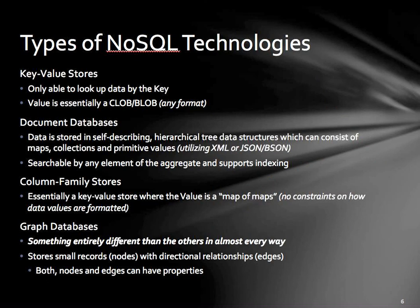Types of NoSQL technologies — the four primary buckets are key-value, document, column families, and graph databases. Graphs are kind of a different animal and I won't talk a lot about them here, but they're covered in the book. It's more of a relationship database — how does this person interact with that person, or this business with that other business or with those individuals or this product.